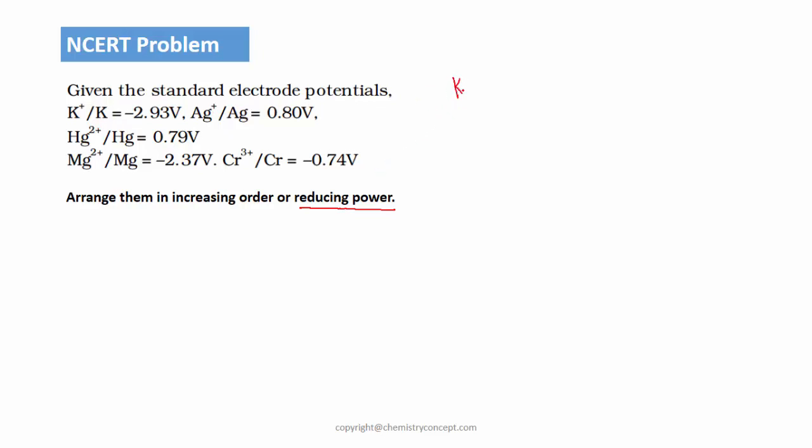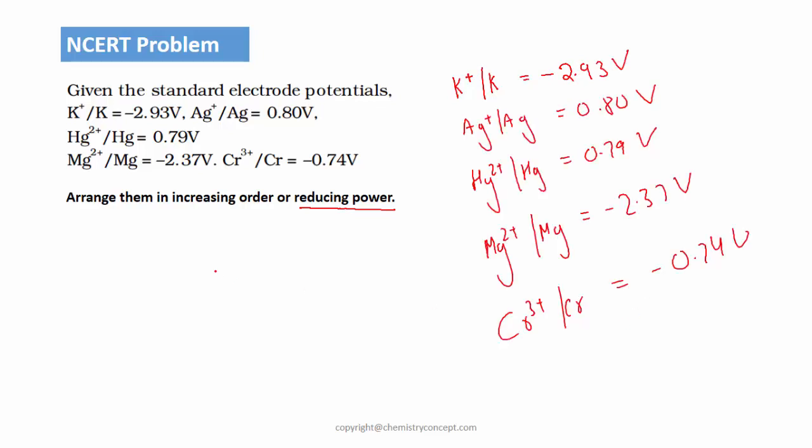Why? Because K positive is converting into K, that means it is getting reduced, and the value is minus 2.93 volts. As we have seen, greater the reduction potential, lower would be the reducing power.